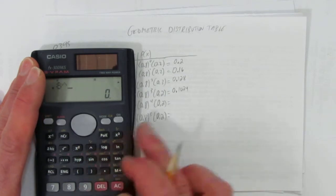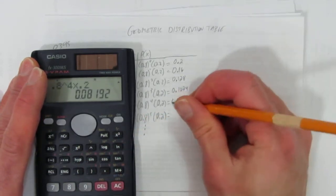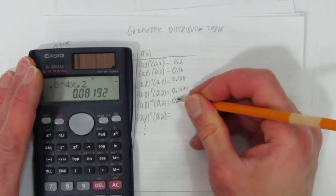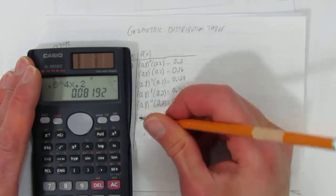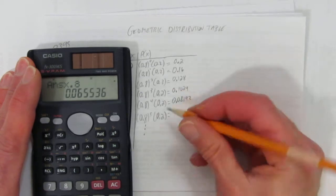You can keep punching these in. 0.8 to the power of 4 times 0.2. But you might notice there's actually a pattern. And you could save yourself some time just by taking the last result. What's the difference between this result and this result? It's just times another 0.8. You could just times this by 0.8. And you'd get the same answer. Look, I'll show you what I mean. Write that down.